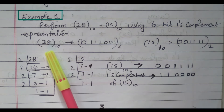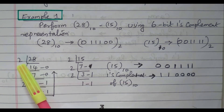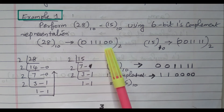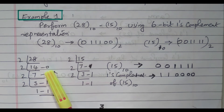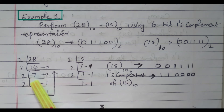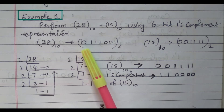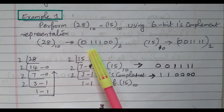First, convert decimal 28 into binary by dividing by 2. 28 divided by 2 is 14 remainder 0; 14 divided by 2 is 7 remainder 0; 7 divided by 2 is 3 remainder 1; 3 divided by 2 is 1 remainder 1. Writing the remainders in reverse order gives 1 1 1 0 0. To make it a 6-digit number, one more 0 is added: 0 1 1 1 0 0. So 28 in binary (6-bit) is 011100. Similarly, convert 15: 15 divided by 2 is 7 remainder 1; 7 divided by 2 is 3 remainder 1; 3 divided by 2 is 1 remainder 1. The binary is 1 1 1 1; to make 6 digits, two 0s are added: 0 0 1 1 1 1.